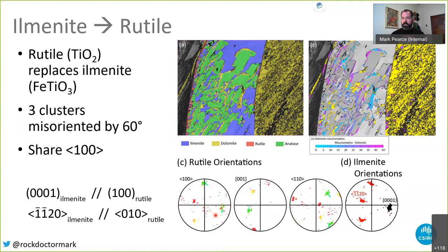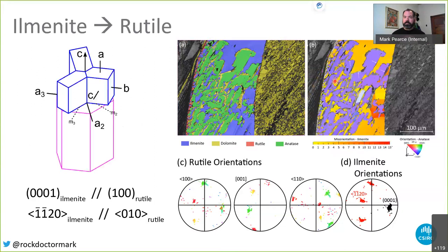Because rutile is tetragonal it has two symmetry-equivalent [100] axes, explaining the two red clusters, and the rutile pole figure matches quite nicely the same orientations as the ilmenite, demonstrating a very strong crystallographic correspondence. As a slight aside, if we look at the dolomite infilling the gaps, the misorientation between dolomite and ilmenite — both sharing the same crystal symmetry — shows that much of the dolomite is within about 20 degrees of the ilmenite orientation, suggesting the ilmenite crystallography is influencing the infilling dolomite despite sharing very little in terms of chemistry.